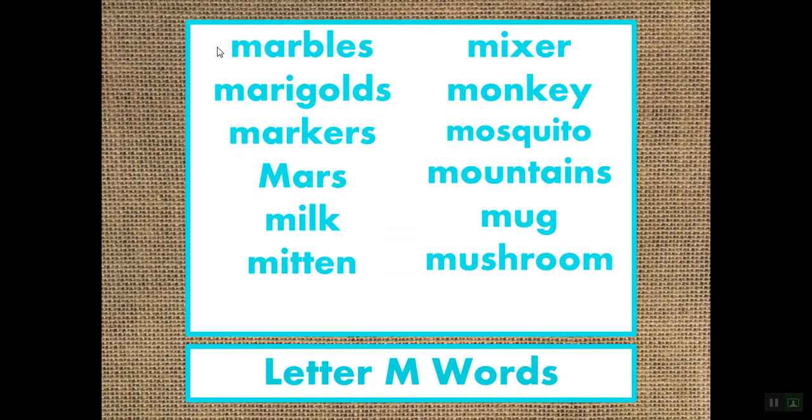Let's say them one more time. Marbles. Marigolds. Markers. Mars. Milk. Mitten. Mixer. Monkey. Mosquito. Mountains. Mug. Mushroom. All 12 of those words start with the letter M and start with the sound mmm.